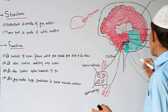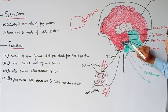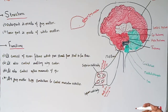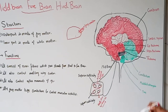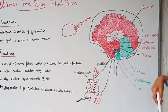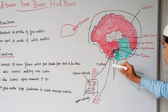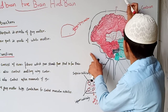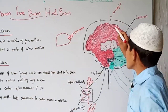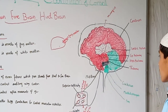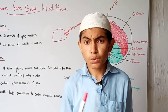The outer part of the midbrain also helps the cerebellum to control muscular activities. So we have talked about the brain's three parts: the forebrain, the midbrain, and the hindbrain. We will also talk about meningitis in the next lecture. See you next time — please subscribe to our channel to receive more videos.